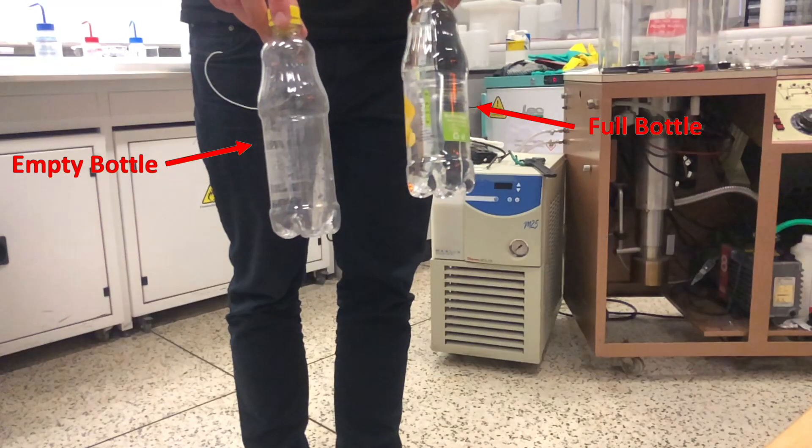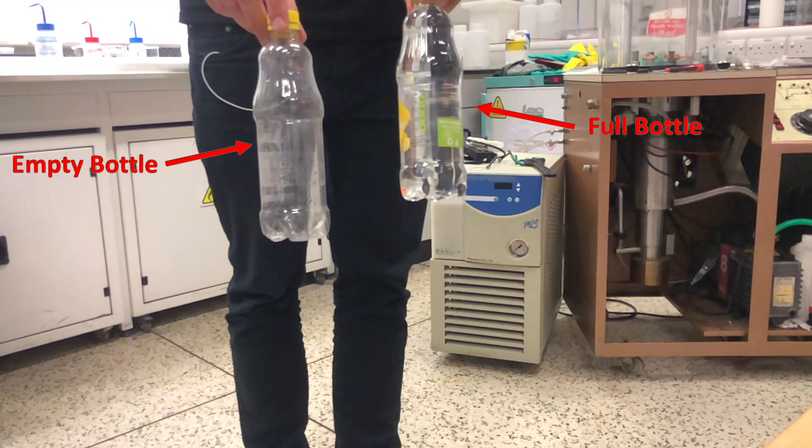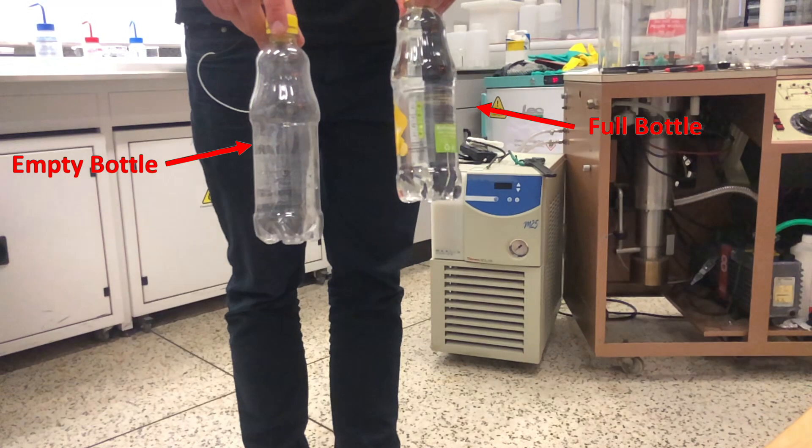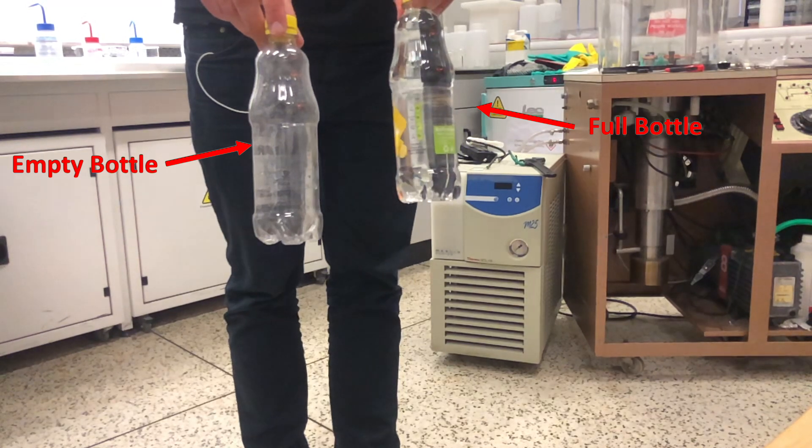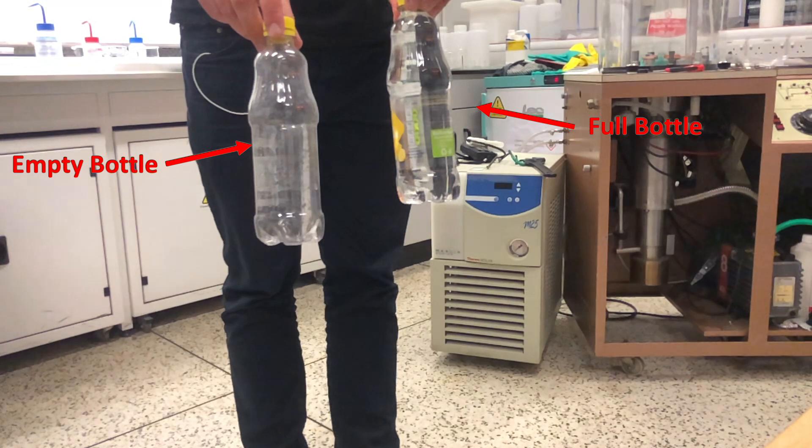Here are two half liter bottles: the one without a label is empty and the other one is full. The bottles themselves weigh around 20 grams and the full bottle is filled with water.